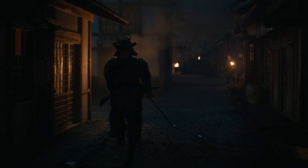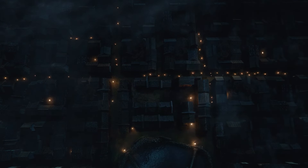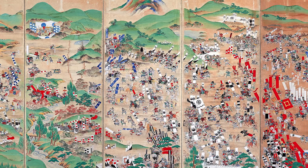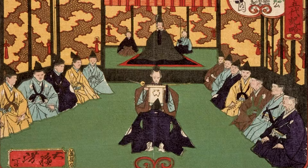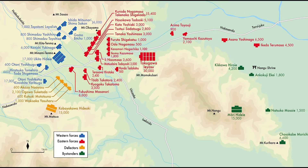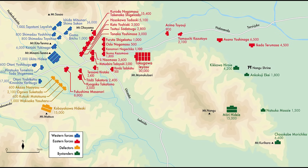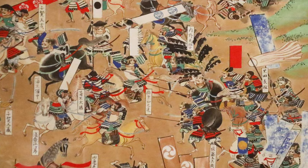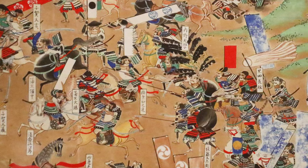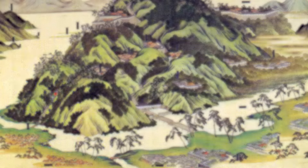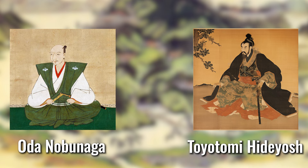In a period marked by civil war with powerful daimyo battling for supremacy, Japan was on the brink of a new era. It was the year 1600, and the Battle of Sekigahara was about to change the course of Japanese history forever, laying the groundwork for the Tokugawa Shogunate's 250-year rule. The Battle of Sekigahara, fought on October 21st, 1600, was not just any skirmish, but a decisive confrontation that reshaped Japan.